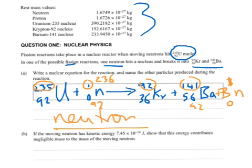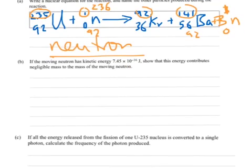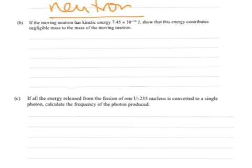Part B, if the moving neutron has a kinetic energy, oh, that must be the input one, otherwise they would assume you could read ahead and find out what the answer is. If the moving neutron has a kinetic energy 7.45 times 10 to the minus 16 joules, show, let's underline that, show that this energy contributes negligible mass to the mass of the moving neutron.